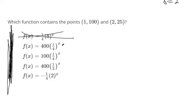If even one point doesn't work, scratch it out. So if we plug in 1 over here, 1 fourth to the first power is 1 fourth. 1 fourth times 400 is 100. So this one works out so far. It makes it to the next round.